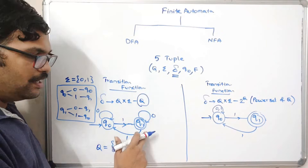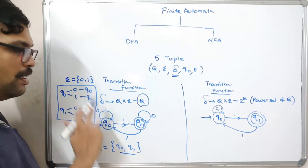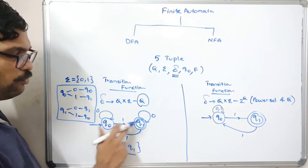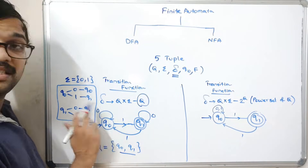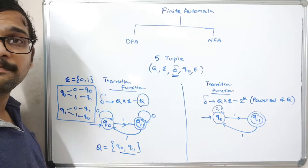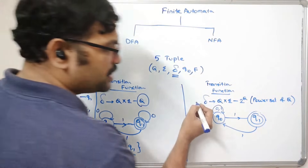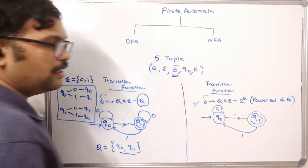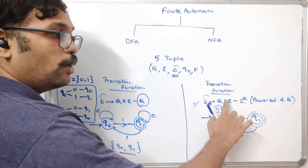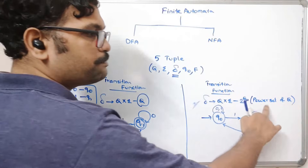In a DFA, for every state there must be a transition for every input symbol. If there are two symbols 0 and 1, every state must have a transition for both 0 and 1 — so Q-naught on 1, Q-naught on 0, Q1 on 0, and Q1 on 1 all have transitions. This is the major difference between DFA and NFA in terms of the transition function: in DFA the result comes from Q, while in NFA the result comes from the power set of Q.